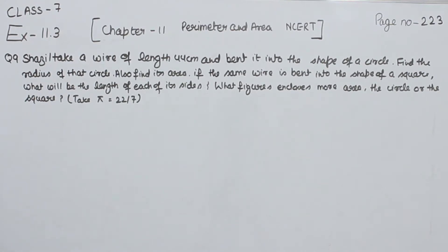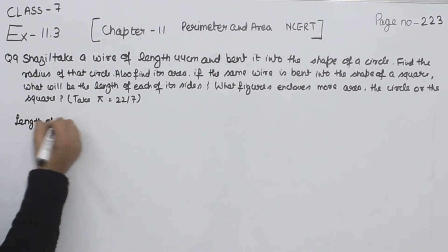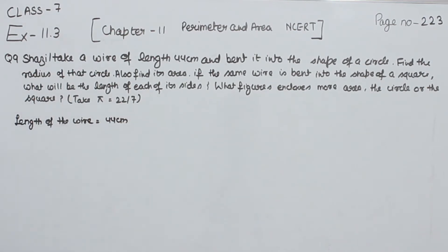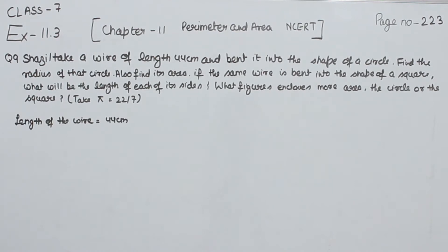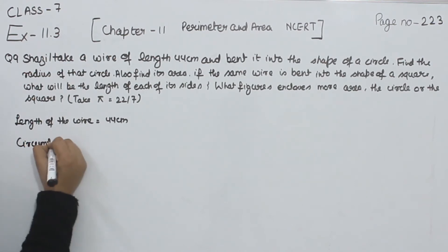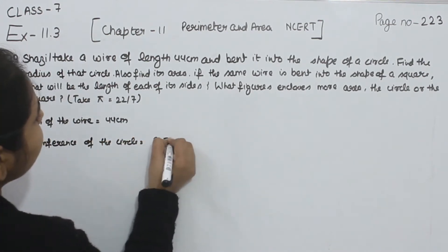So first of all, we will have the length of the wire as 44 cm. Now this wire is bent in the shape of a circle. So we know that the wire needed for bending as a circle will be in the shape of the circumference of the circle. So we will write here: the circumference of the circle is equal to 2πr.